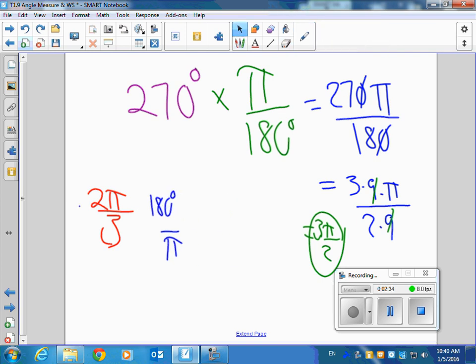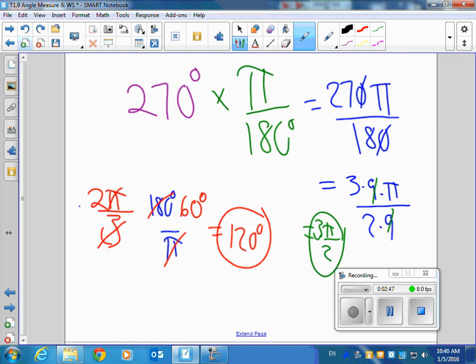And this one's a little nicer because these just cancel right out. One-third of 180 is 60. 60 times two is 120 degrees. So that's how you convert degrees to radians and radians to degrees.